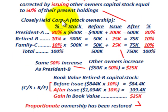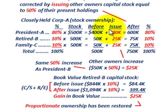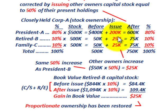Looking at the closely held corporation under the preemptive stock rights scenario: we started with president A owning 80% and each of the retired members having 10%. The original stock issue was at $500,000, allocated as $400,000 to president A and $50,000 to each of stockholders B and C. With the preemptive rights, president A paid $200,000 in cash and took out $200,000 in capital stock, going from $400,000 to $600,000.